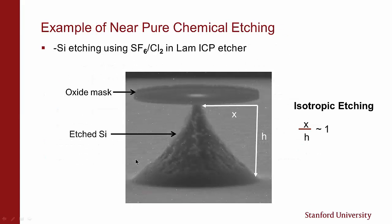Here is an example of near-pure chemical etching done on our LAM ICP etcher using SF6 and chlorine, set up to be very isotropic. We see that the lateral etch rate is almost equal to the vertical etch rate, giving a ratio of almost one.